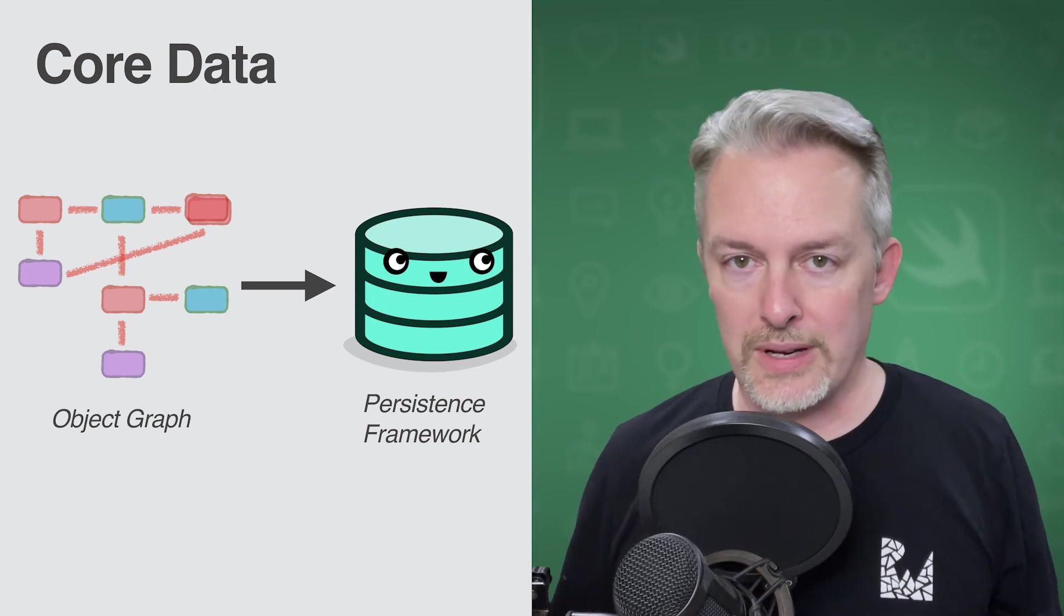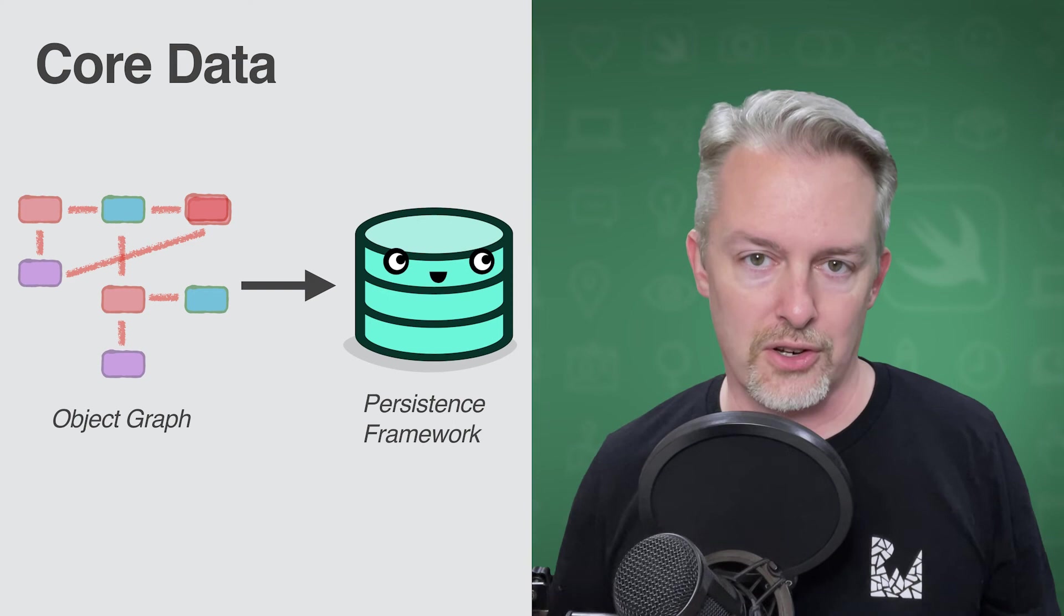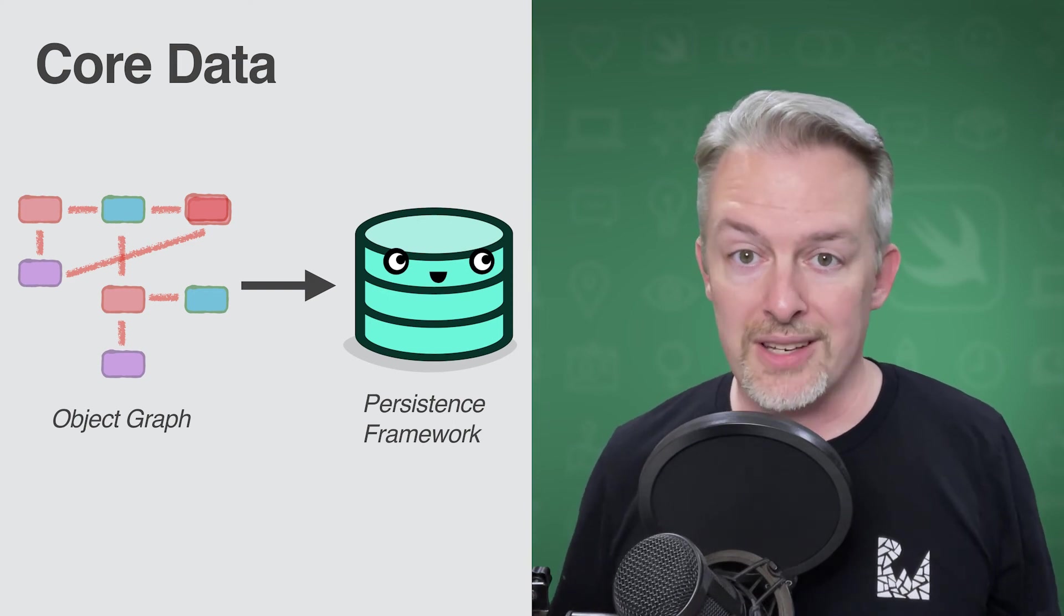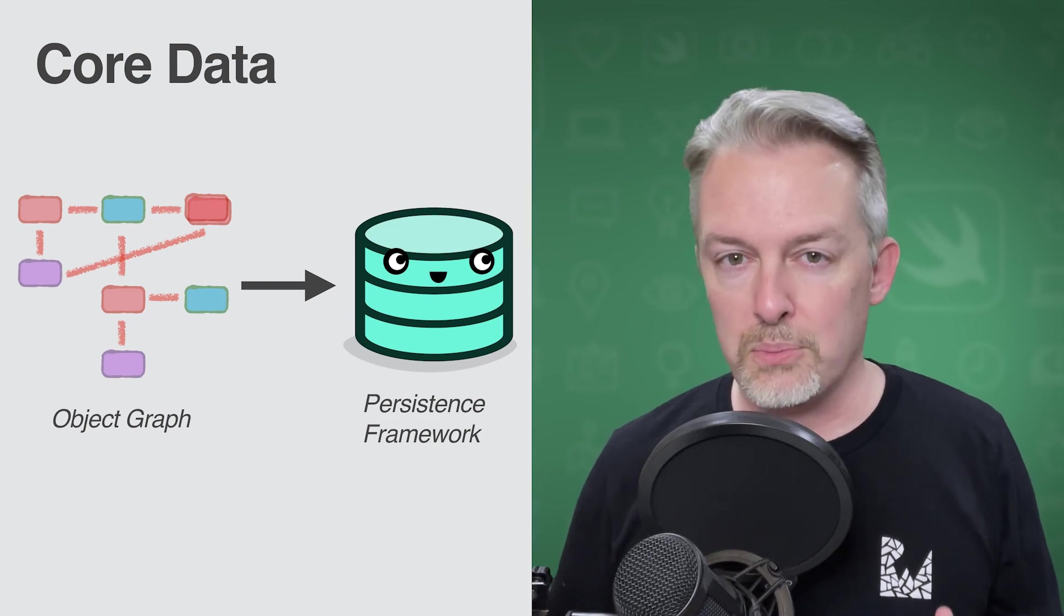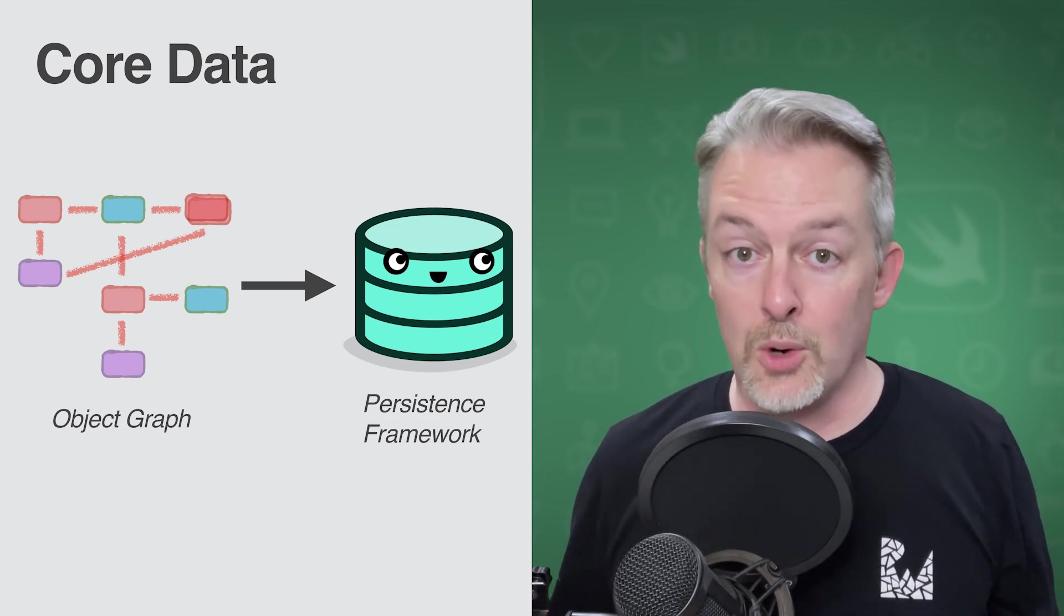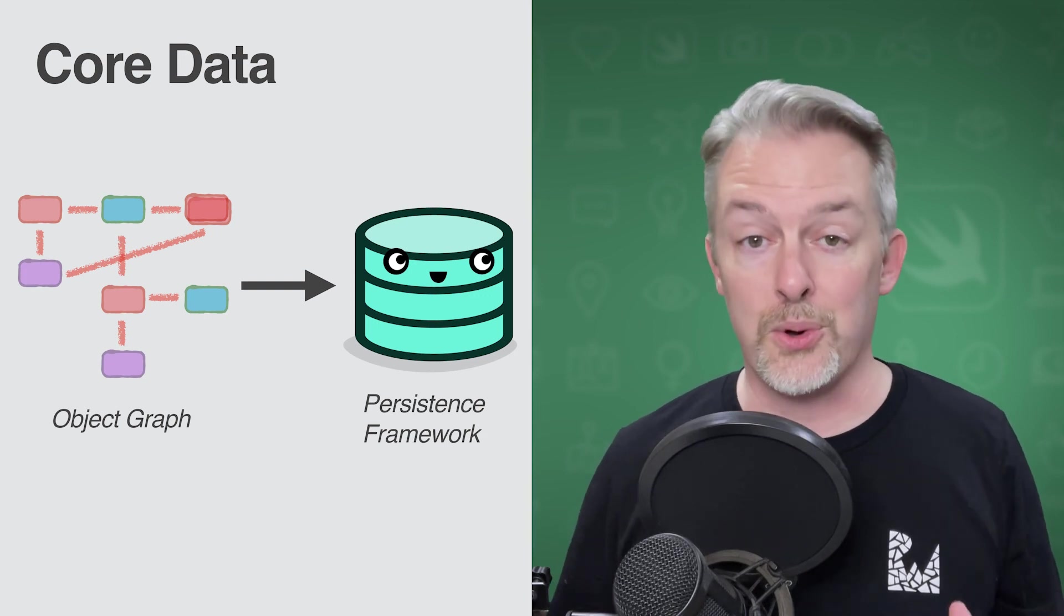This is the second job of Core Data, to provide a Persistence Framework that handles that set of functionality. That framework contains several different classes, each of which takes responsibility for a portion of the framework. When combined, these classes are commonly referred to as the Core Data stack.